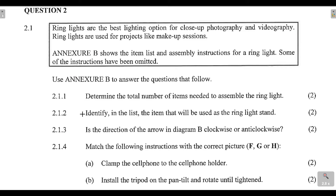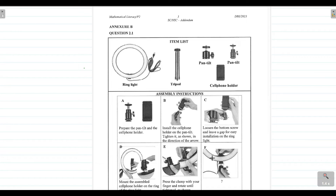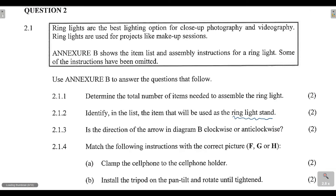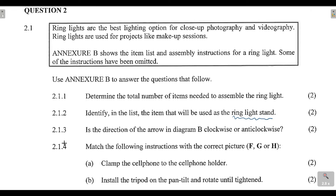Question 2.1.2 says: 'Identify in the list the item that will be used as the ring light stand.' If you look at the completed assembly, what is used to hold up the ring light? That would be the tripod. So for question 2.1.2, the answer is the tripod — nice easy marks.